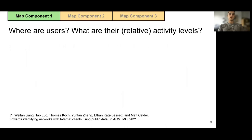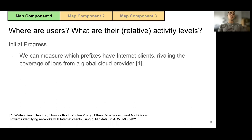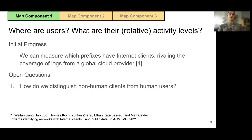Let's jump into the components of the map. Our first component identifies where we can find internet users and tells us the relative activity levels. We can measure internet activity at the prefix level, rivaling coverage of logs from a global cloud provider, which we verified by inspecting their logs. To fully realize this component, we first need to figure out how to distinguish internet clients — anything using the internet — from internet users, that is, actual people using the internet. Second, we're good at finding clients, but are still working on ways to measure the relative activity levels.